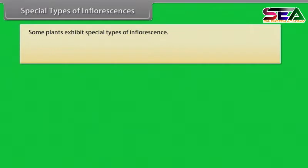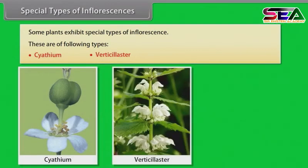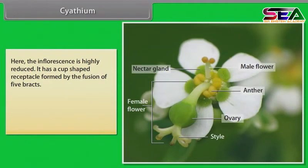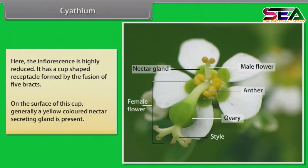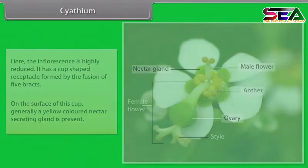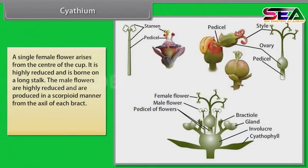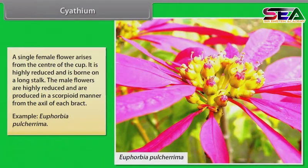Some plants exhibit special types of inflorescence. In cyathium, the inflorescence is highly reduced. It has a cup-shaped receptacle formed by the fusion of five bracts. On the surface of this cup, generally a yellow colored nectar-secreting gland is present. A single female flower arises from the center of the cup, highly reduced and borne on a long stalk. The male flowers are highly reduced and are produced in scorpioid manner from the axil of each bract. Example: Euphorbia pulcherrima.